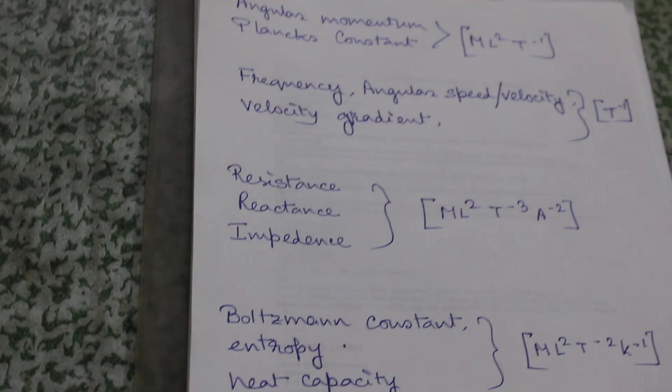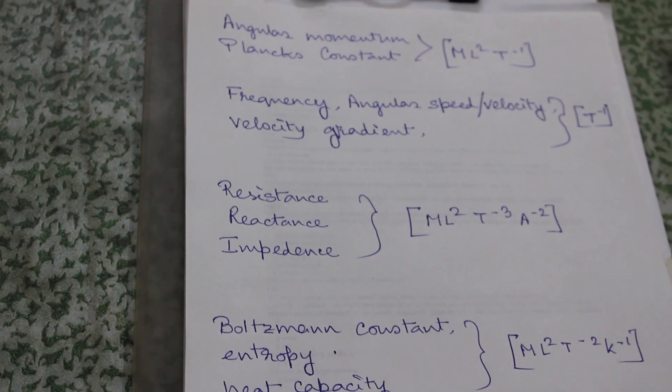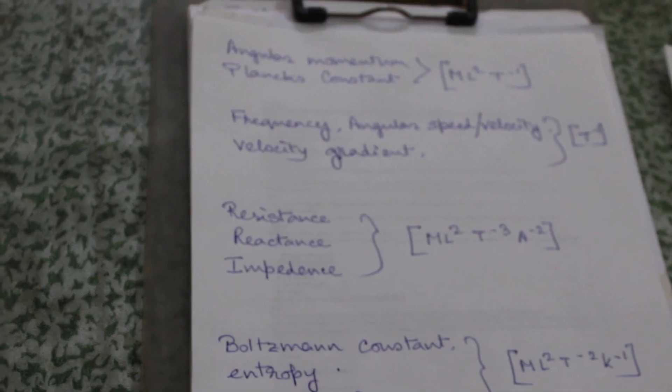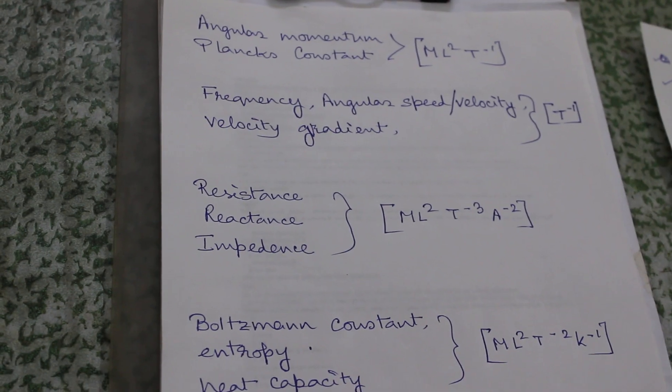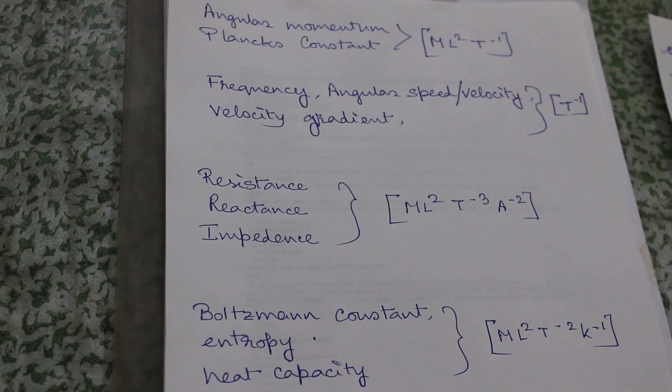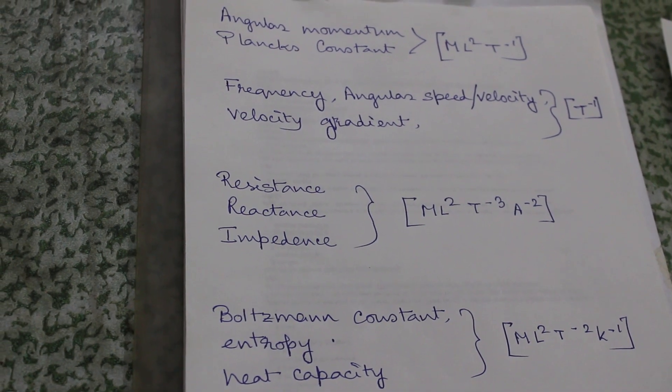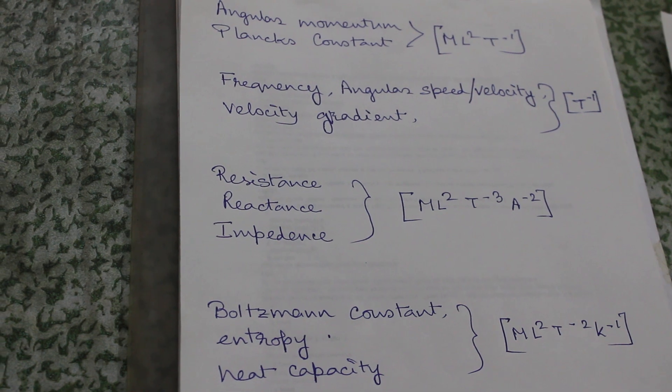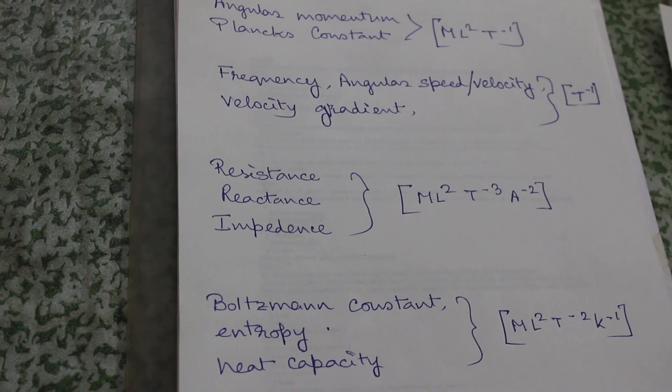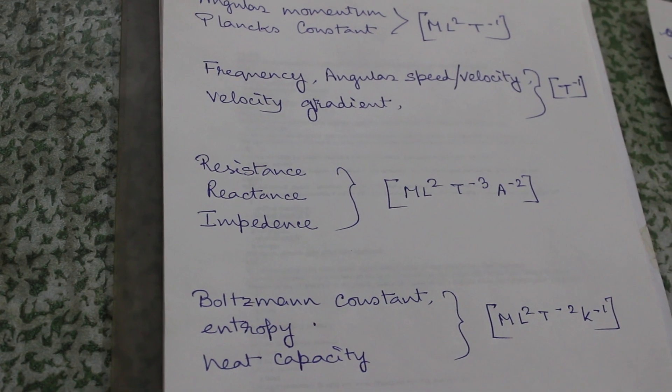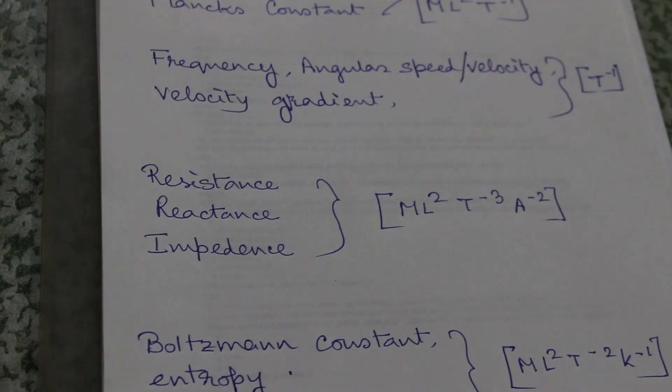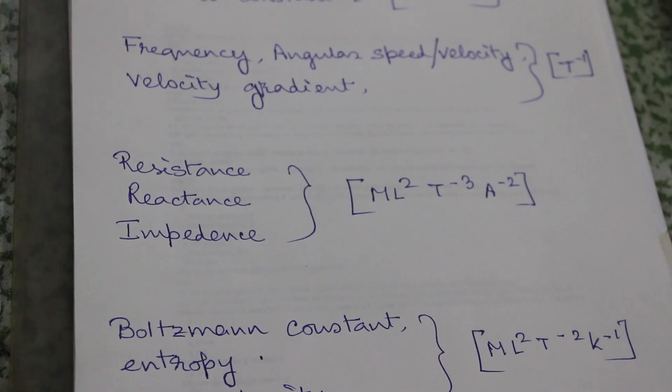Then comes angular momentum and Planck's constant. They also have the same dimension: ML² T⁻¹, and their unit is joule-second. Next, frequency, angular speed (that is omega), and velocity gradient - all of them have the same dimension: T⁻¹.